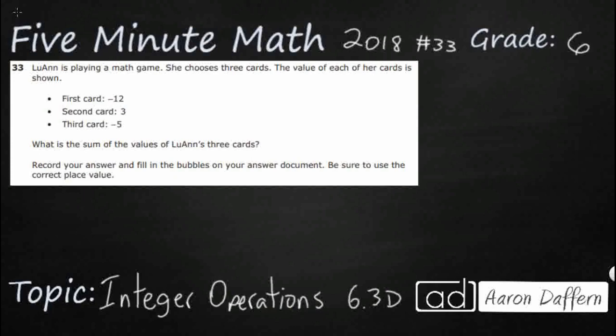So Luanne is playing a math game and she chooses three cards. Her cards are negative 12, 3, and negative 5. We simply have to find the sum of the values of her three cards. Sum means to add, so let's set it up like this: negative 12 plus 3 plus negative 5.